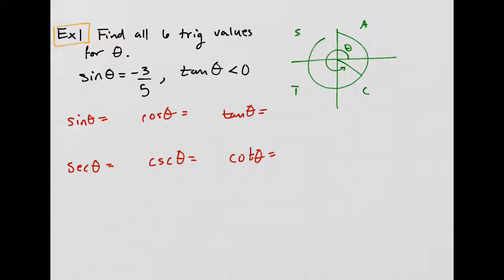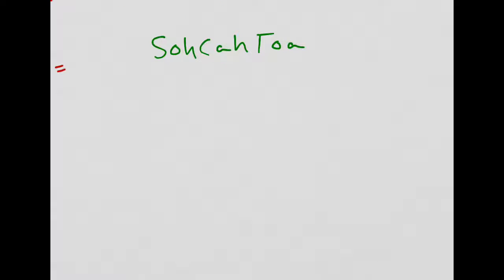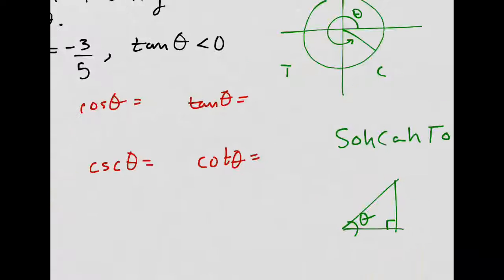Let's use the right triangle definitions. Sine is opposite over hypotenuse - I'm using SOHCAHTOA. I'm just going to draw a right triangle. It doesn't matter which way it faces, but you do have to put in theta.